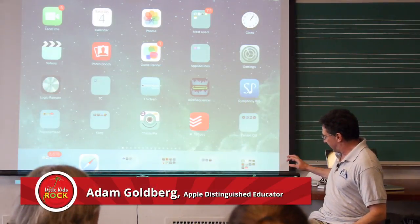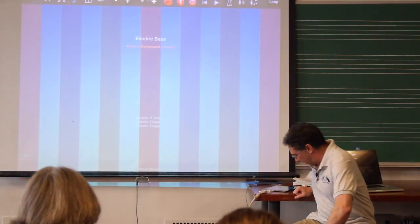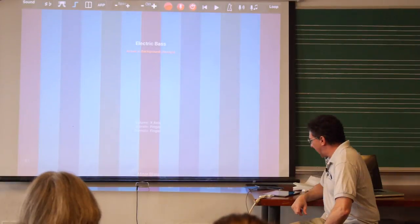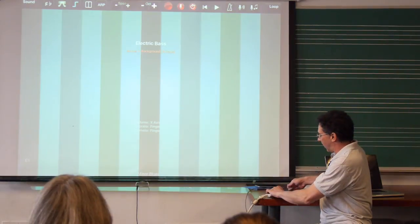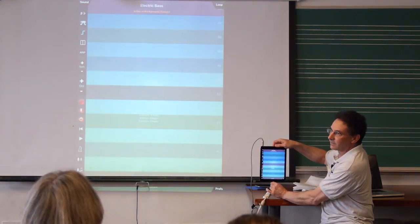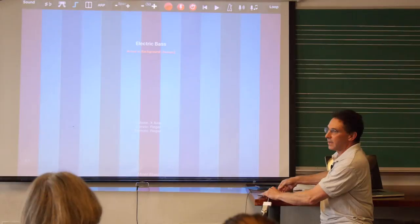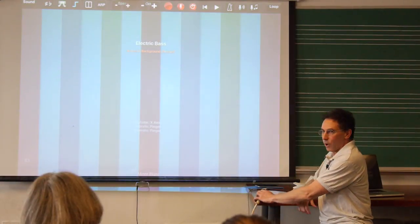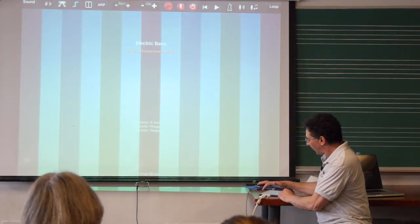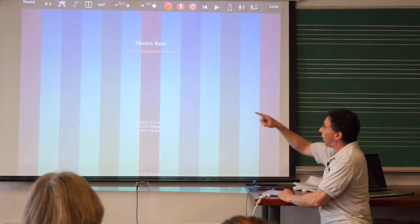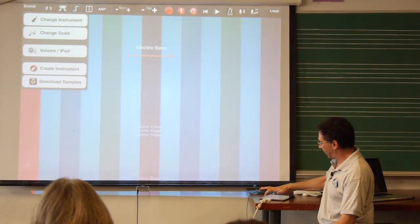If you have ThumbJam and you have just one sound, if you want to change the sound you go up. It depends on how you're holding it - it'll either look like this in portrait mode or like this in landscape mode. Some apps you can only work in one mode, but this one works in both. So you go up to where it says sound in the upper left hand corner, and you can change the instrument.